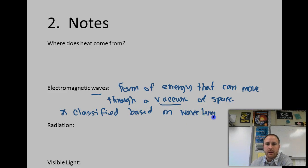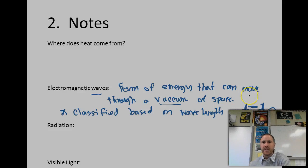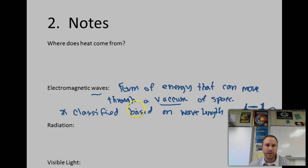The wavelength is basically the space from crest to crest — from the top of one wave to the top of the next. That space in between is called a wavelength. There are shorter wavelengths and longer wavelengths, and we're going to talk about each one of those.